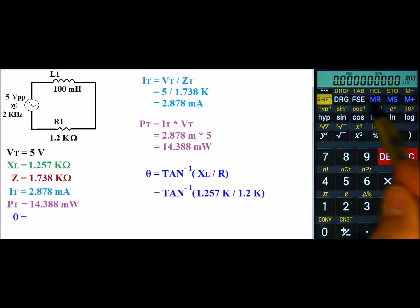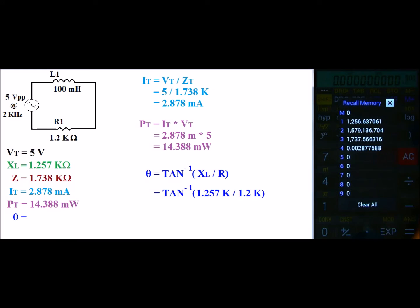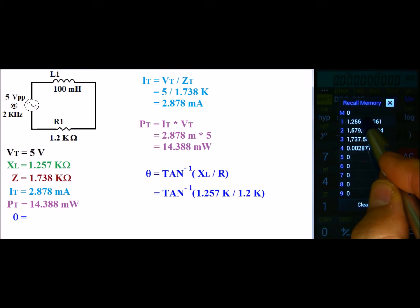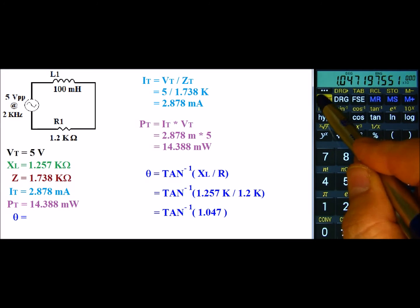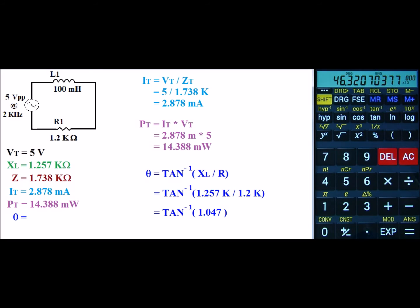So we'll go ahead and recall our Z value divided by 1.2 exponent 3. And that gives us a value of 1.047. And then I will go ahead and hit the inverse of the tangent. And that gives us an angle of 46.32 degrees.